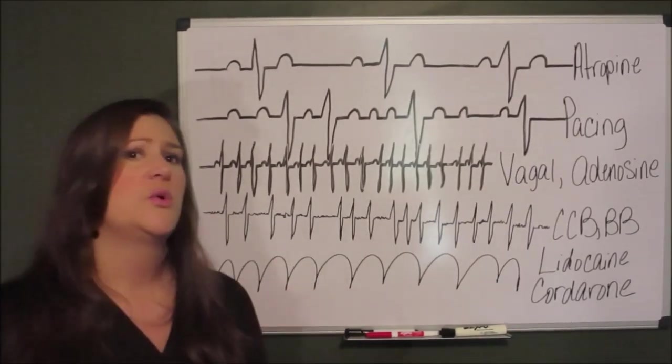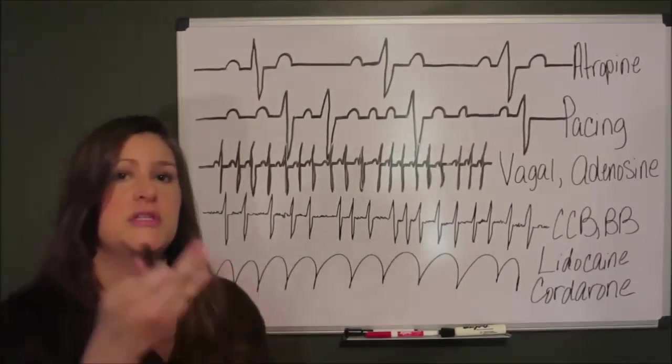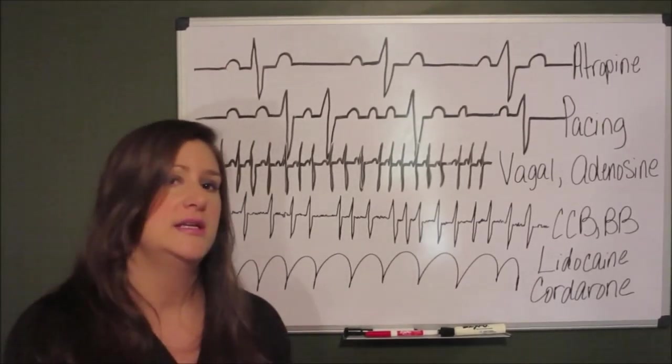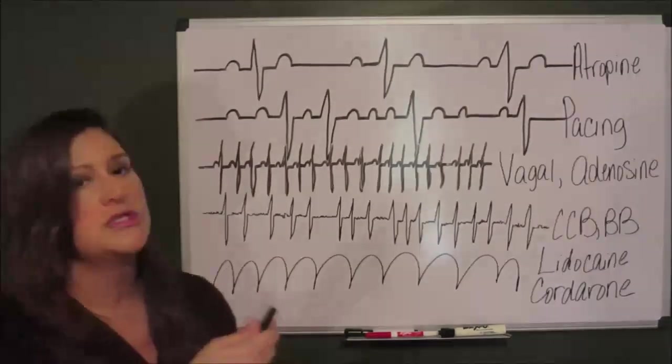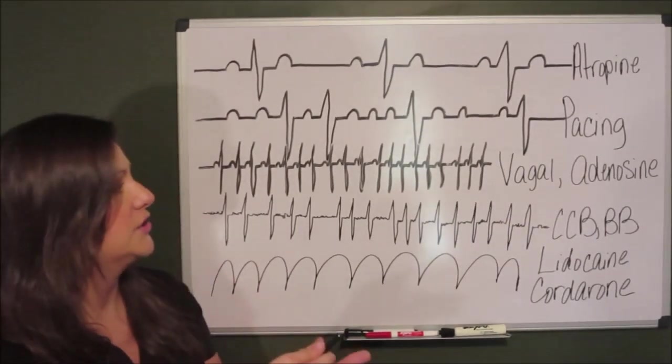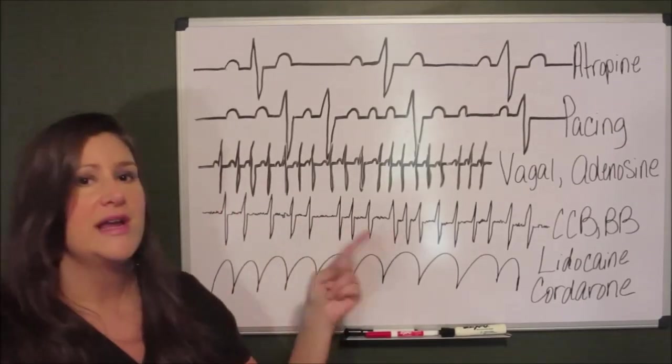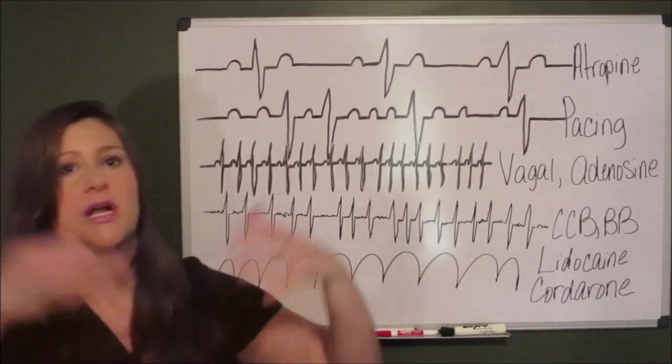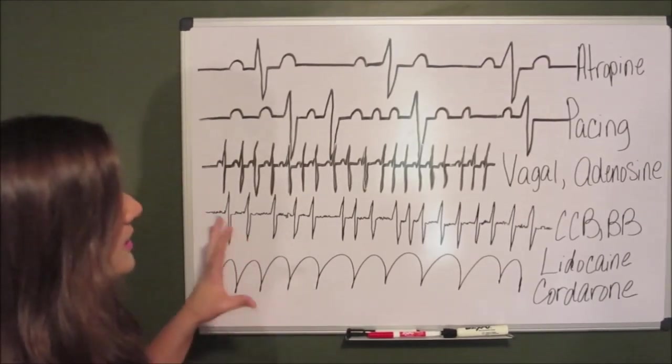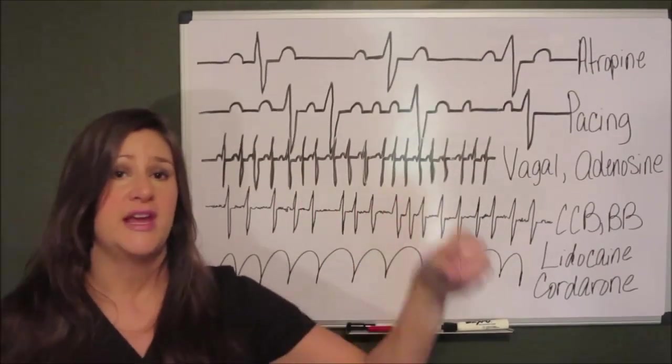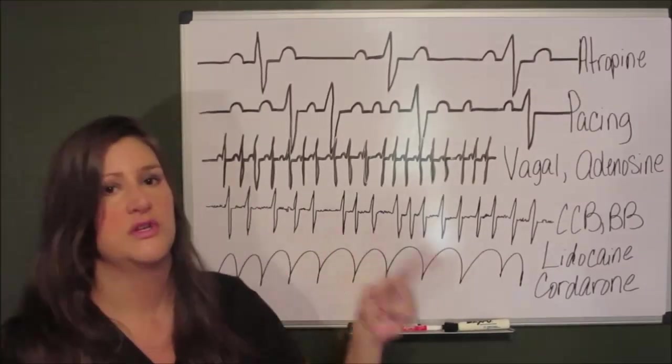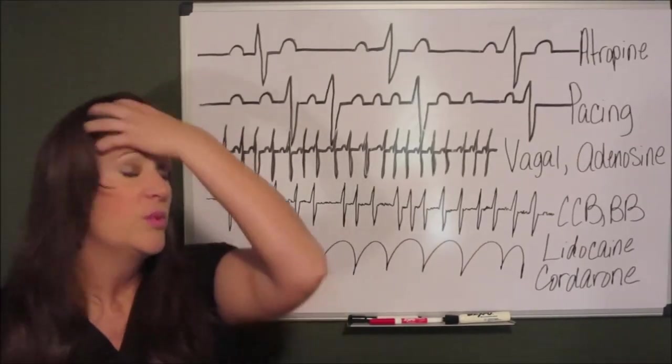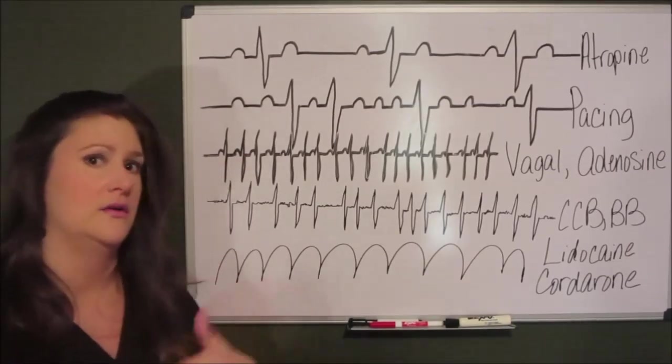Adenosine creates a heart block. It stops conduction through the AV node. What we're hoping for when we push that adenosine is that it's going to induce that heart block, it's going to stop that conduction through the AV node and slow that rate down enough that we can identify what the underlying rhythm is. Because SVT is an umbrella term, we've got to figure out is this dysrhythmia originating from the atria or is it originating from the ventricles. So we get that adenosine and we push it, hopefully to slow it down enough so we can correctly identify the underlying dysrhythmia.